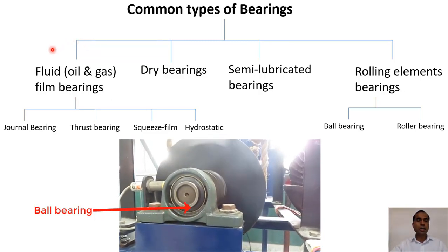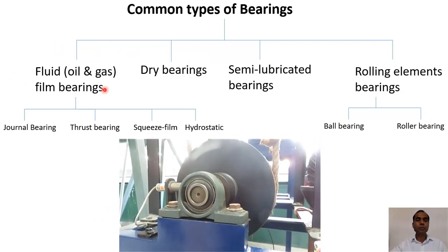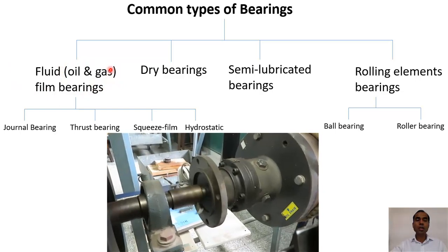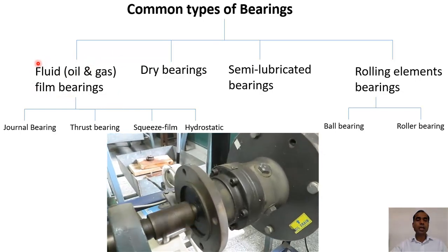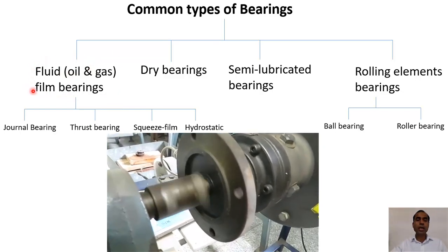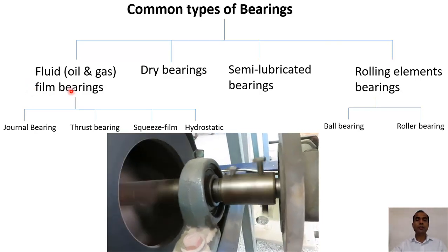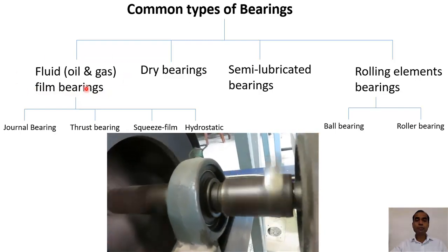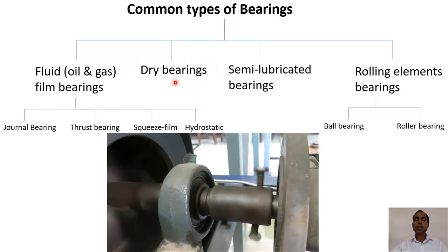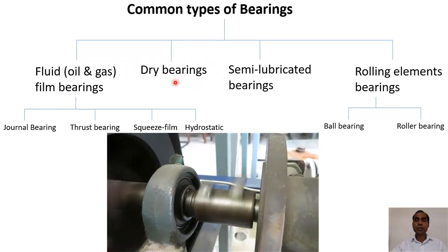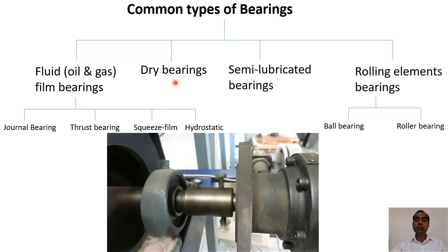There are four types of bearings. The first are fluid film bearings, which can be based on oil or gas. In this type, the coefficient of friction is reduced by having a fluid film in between two surfaces. Another type is the dry bearing, which is based on solid lubrication — the material itself gives a low coefficient of friction and can therefore run dry.